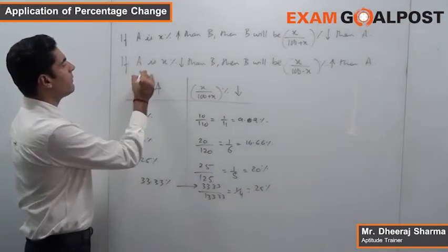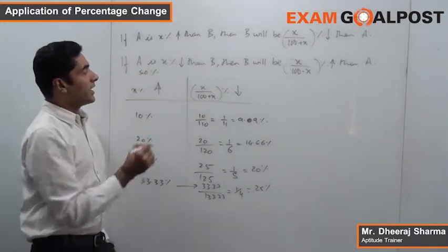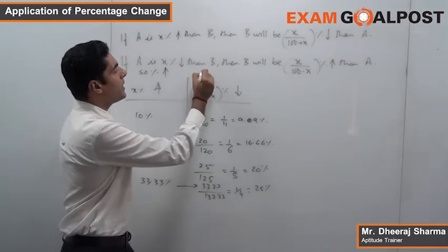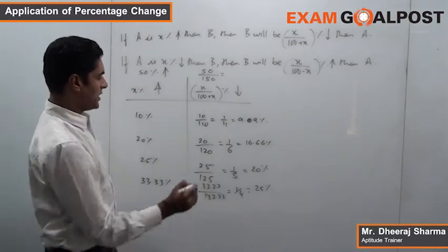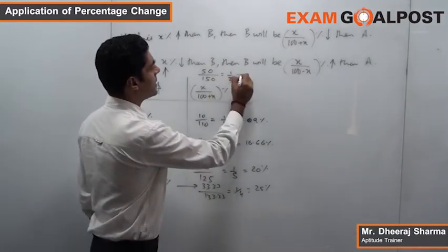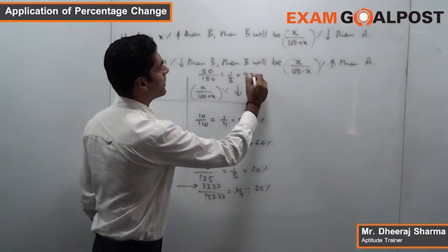Do it for one more percent. Let's say 50 percent. An increase of 50 percent will get compensated by a decrease of 50/150, which is nothing but 1/3, which comes out to be equal to 33.33 percent.